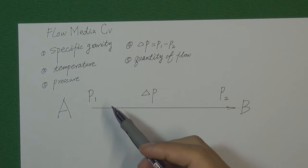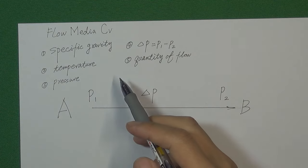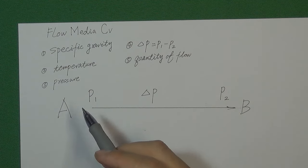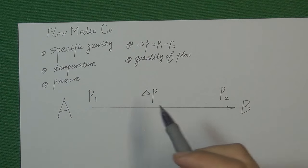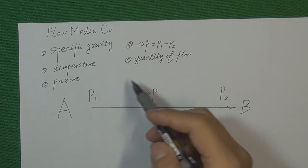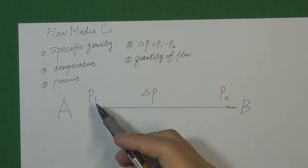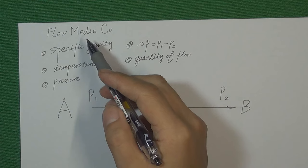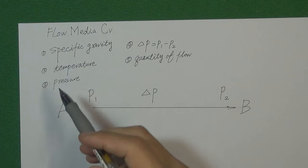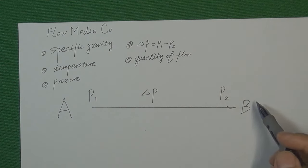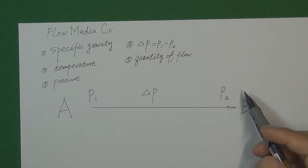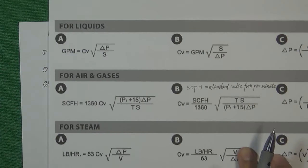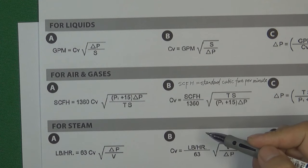To understand the relationship between valve CV and flow medium CV, first we need to understand what is flow medium CV. Flow medium CV tells the engineer how much flow medium we are going to transfer through the valve from one side to another. We get the flow medium CV by calculation from five design factors about the flow medium and the flow control system: the specific gravity of the medium, the temperature of the medium, the pressure pushing the medium, the differential pressure from one side to another, and the quantity of flow.